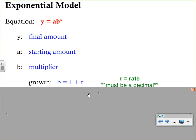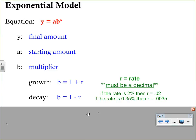If it is growth, you will calculate b by doing 1 plus r. Now you may ask, where is this r coming from? If you look off to the side here, r is the rate and the rate will be given to you in the problem as a percentage. We know that when we're given a percent, we have to convert that percentage to a decimal.